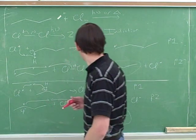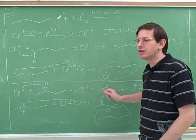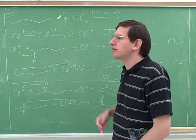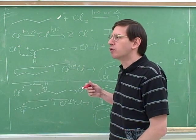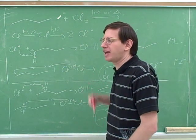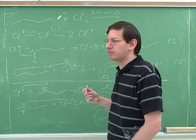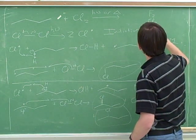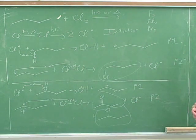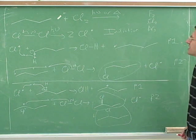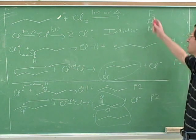Some halogens really prefer to form the more substituted radical, while others don't care very much. Basically, the more unreactive the halogen is, the more help it needs from a stabilized radical. A very reactive halogen doesn't really need a stabilized radical because it's so reactive anyway. The instructor asks: among the halogens that undergo radical halogenation — fluorine, chlorine, and bromine — which is the most reactive? The student guesses bromine, but the instructor says it's actually fluorine.